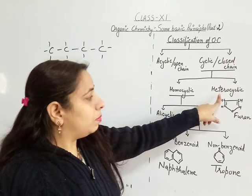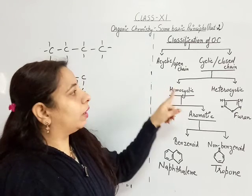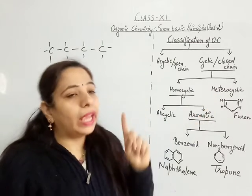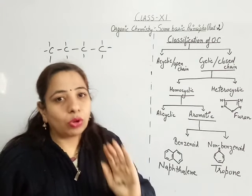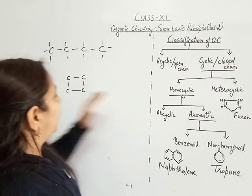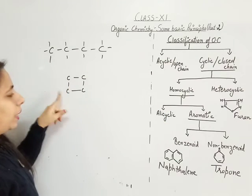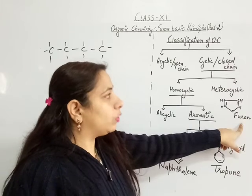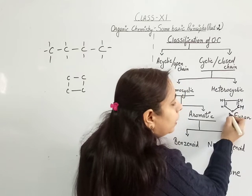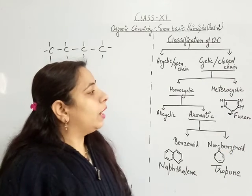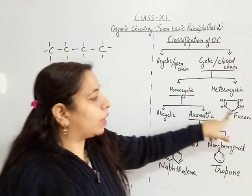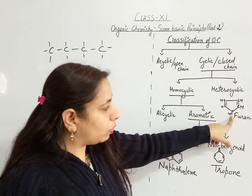Homocyclic and heterocyclic: homocyclic means all the atoms in the ring are of the same type. But furan is an example of a heterocyclic compound — it is a closed chain, but one of the atoms at the vertices is oxygen instead of carbon. So this is a heterocyclic closed chain because all the atoms are not carbon.